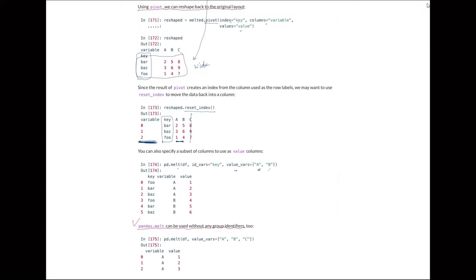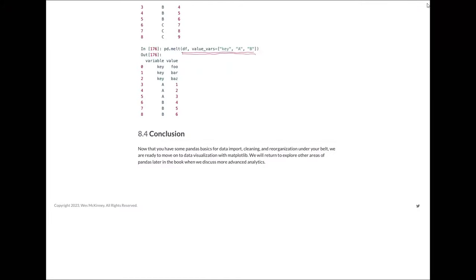We can also use melt with value_vars set to only a and b — choosing only those two columns without c. Or use melt without a group identifier with value_vars as a, b, and c. We can also designate key and a and b, with key coming first and the rest at the bottom as a long format.